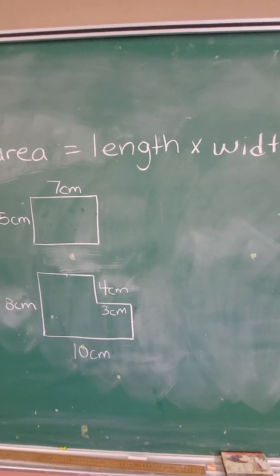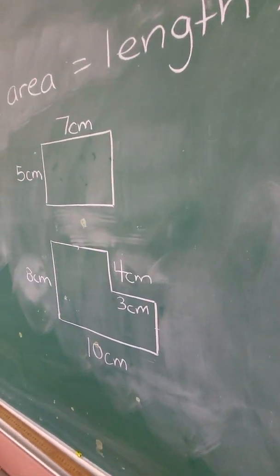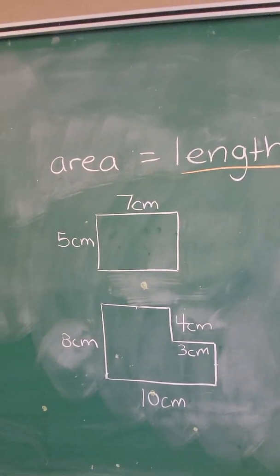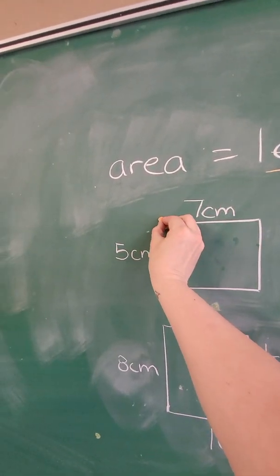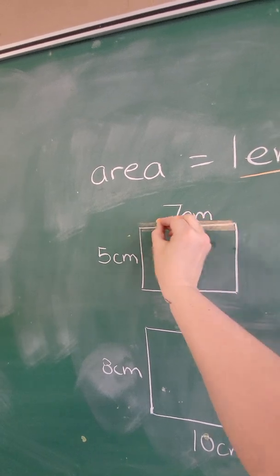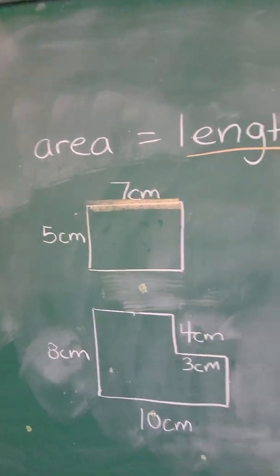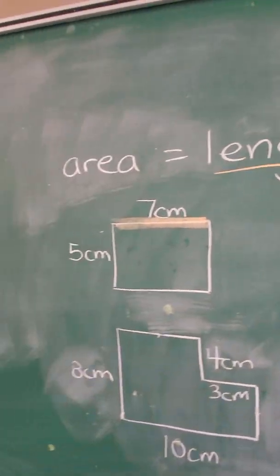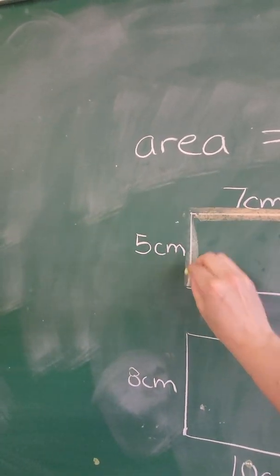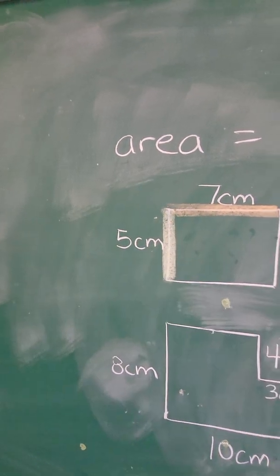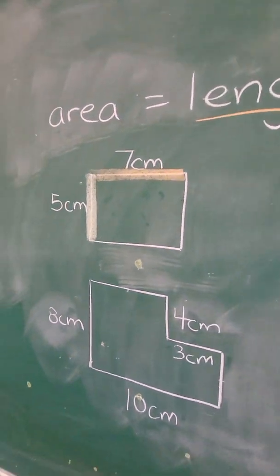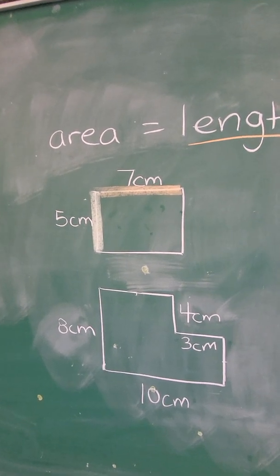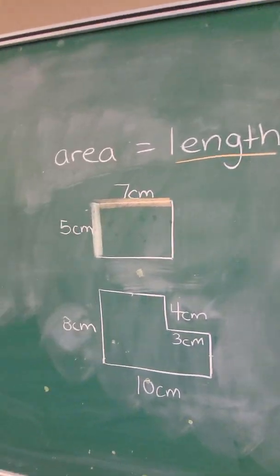This works for squares and rectangles. So, the length is usually the longer part of the rectangle. That's this part right here. And the width is the shorter part. But hey, if you get them mixed up, it doesn't matter, because you're still multiplying both numbers anyways. So length times width is area.